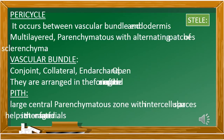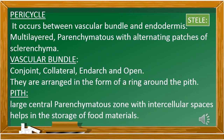Next is the stele. The stele has three regions: pericycle, vascular bundle, and pith. The pericycle occurs between the vascular bundle and endodermis. It is a multi-layered region where you find sclerenchyma and parenchyma in alternating patches.